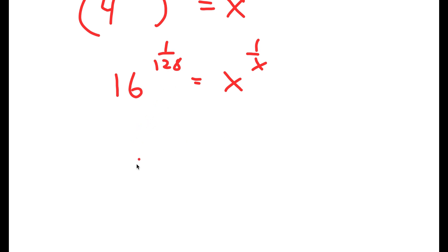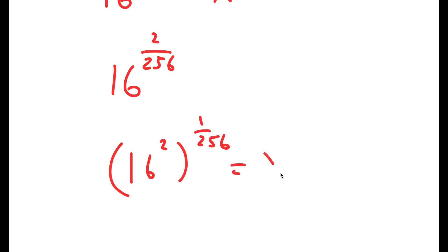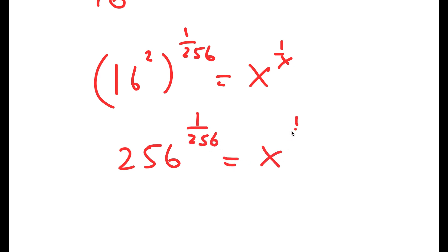Again, this is the same thing as 16 to the power of 2 over 256, so I get 16 squared to the power of 1 over 256 is equal to x to the power of 1 over x. And I get 256 to the power of 1 over 256 is equal to x to the power of 1 over x.